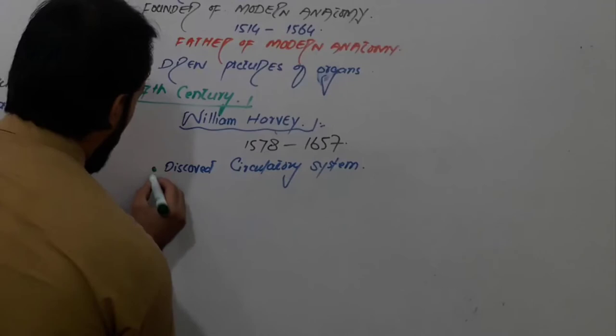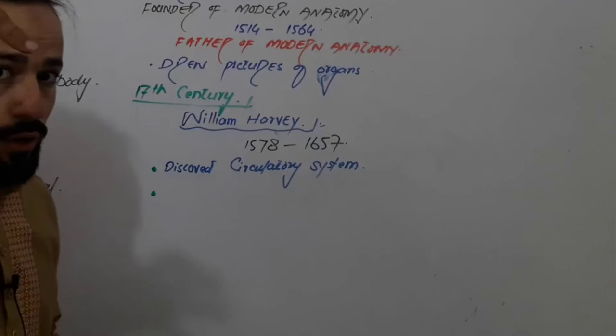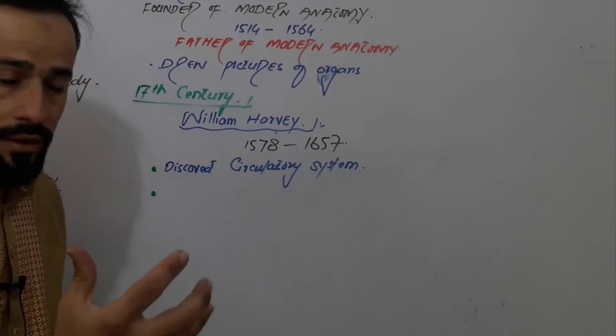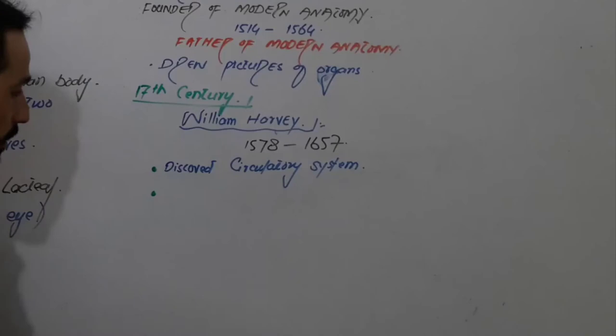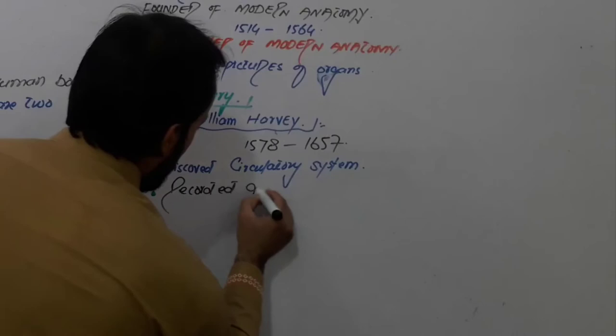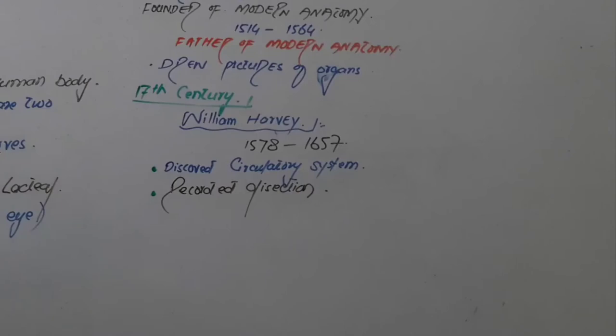William Harvey also performed the first recorded dissection — dissections were recorded on video to show to people. So for the first time, a recorded dissection was done by William Harvey. A great name in the history of anatomy.